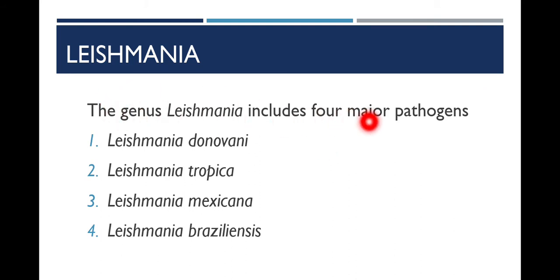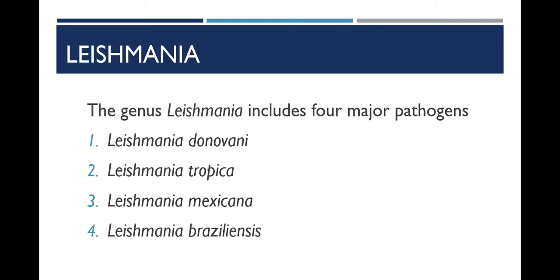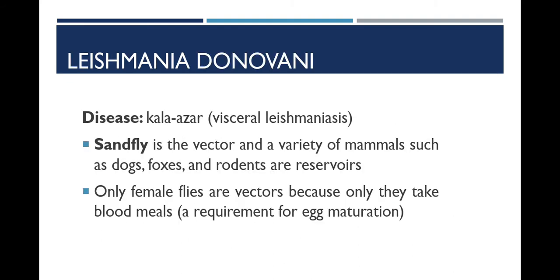There are four major species of Leishmania: Leishmania donovani, Leishmania tropica, mexicana, and brazilensis. You may also read these as Leishmania donovani complex, Leishmania tropica complex, mexicana complex, and brazilensis complex.